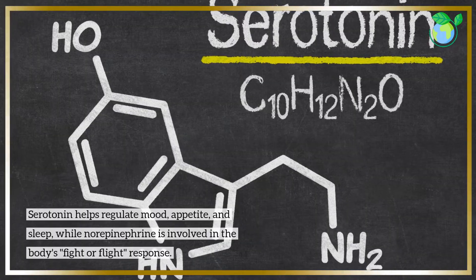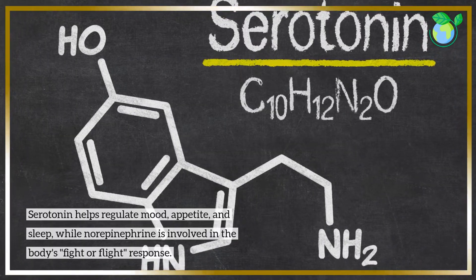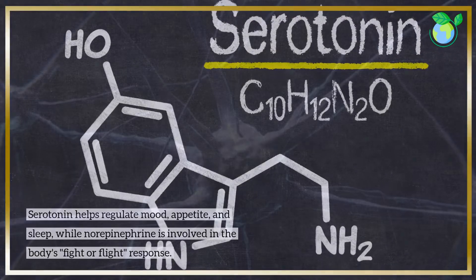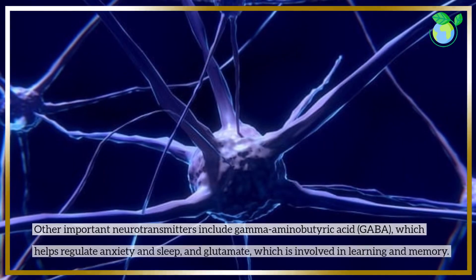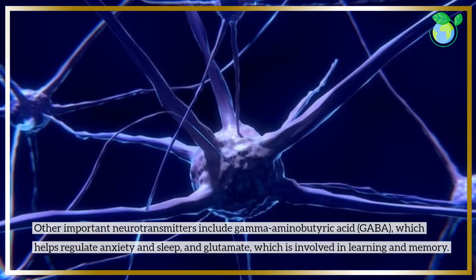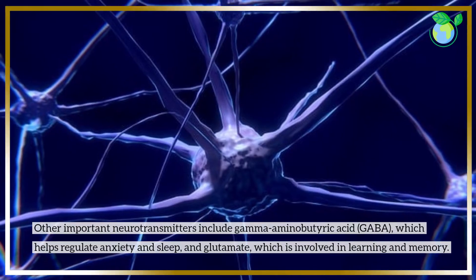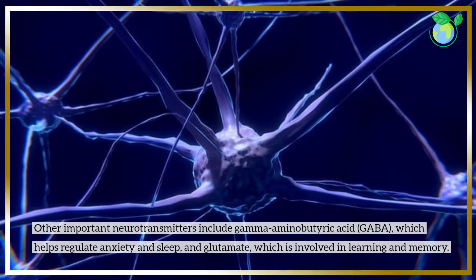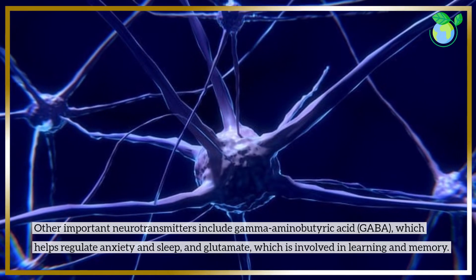Norepinephrine is involved in the body's fight-or-flight response. Other important neurotransmitters include gamma-aminobutyric acid (GABA), which helps regulate anxiety and sleep, and glutamate, which is involved in learning and memory.